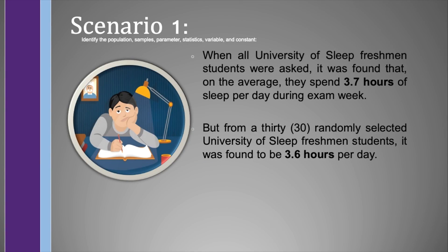For scenario number one, suppose that when all University of Sleep freshmen students were asked, it was found that on the average, they spend 3.7 hours of sleep per day during exam week. But from 30 randomly selected University of Sleep freshmen students, it was found to be 3.6 hours per day. Can you identify which one is the population, samples, parameters, statistics, variable, and constant?